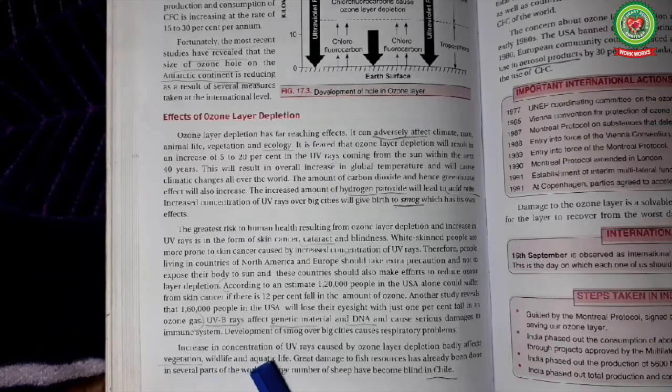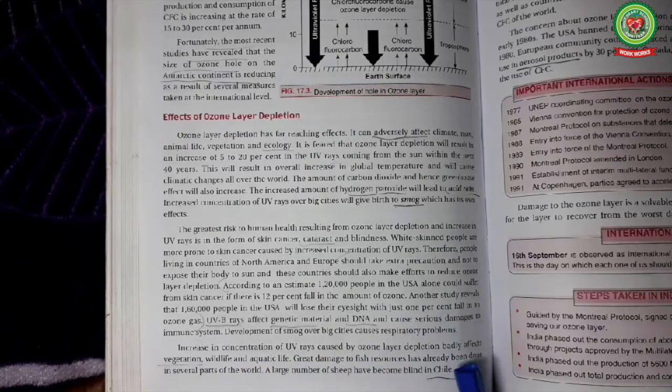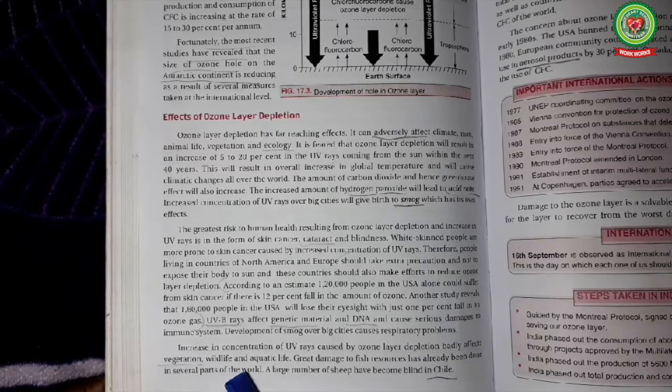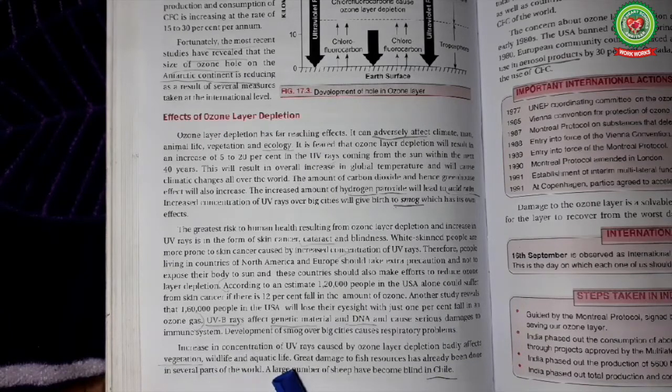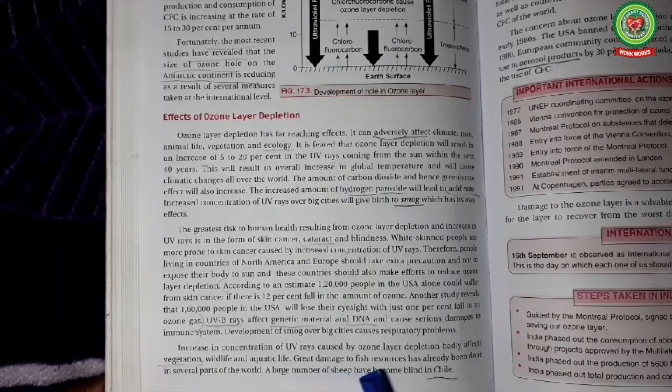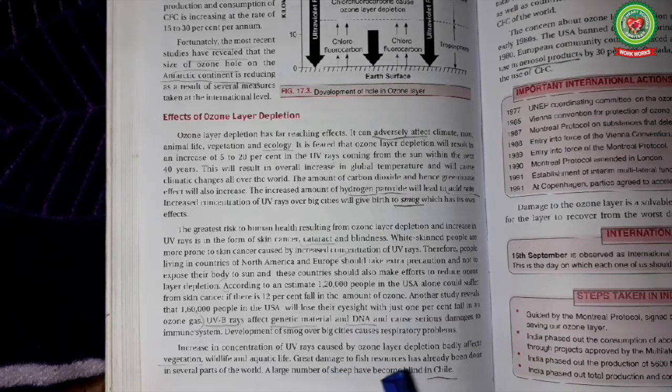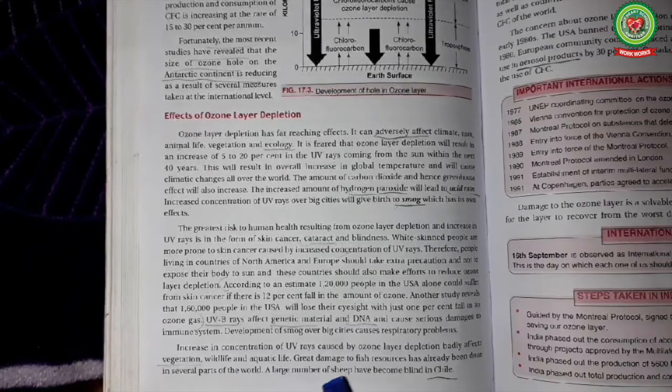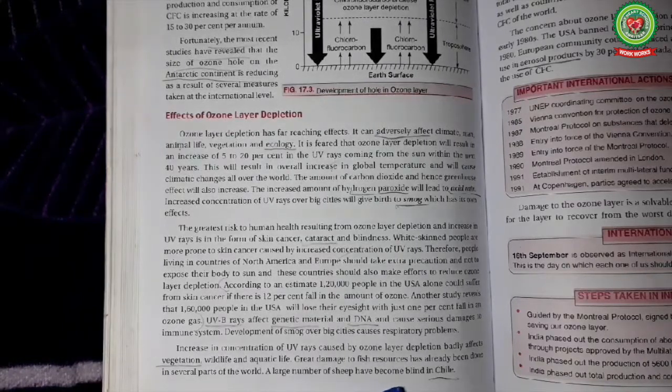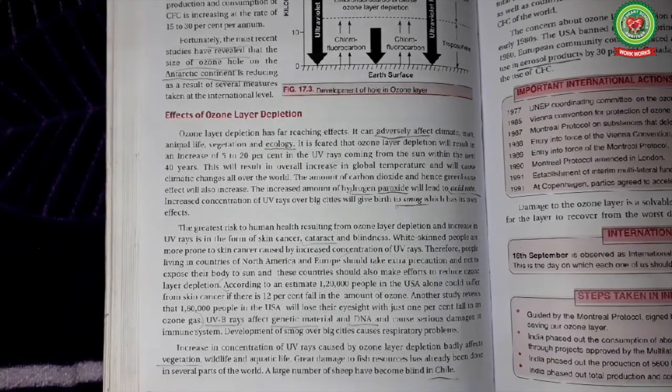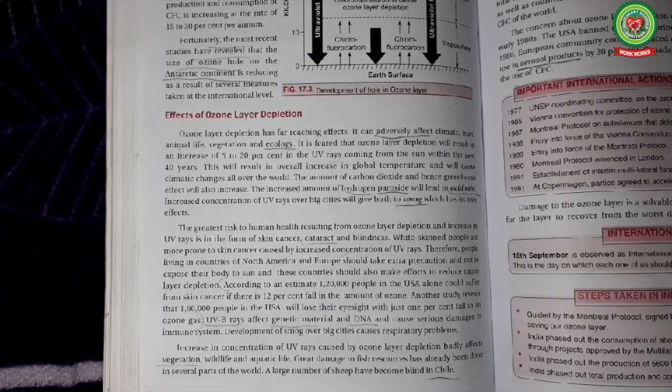Increase in the concentration of UV rays can badly affect the vegetation, wildlife and aquatic life. Great damage to fish resources has already been done in several parts of the world. A large number of sheep have become blind in Chile located in South America.